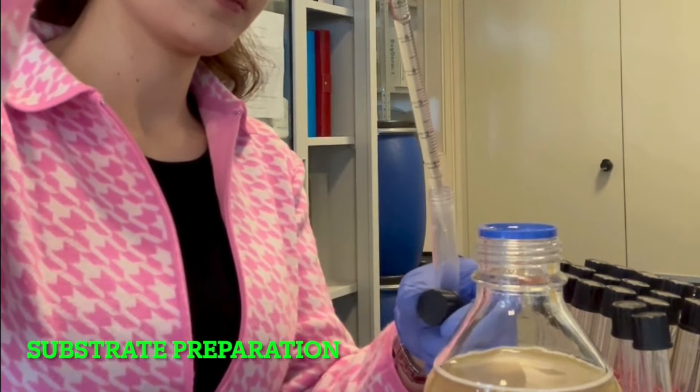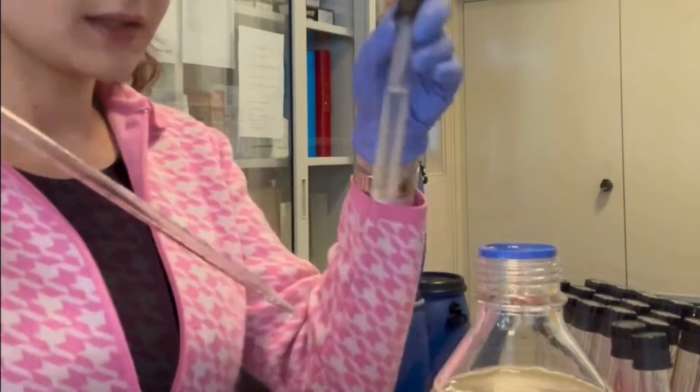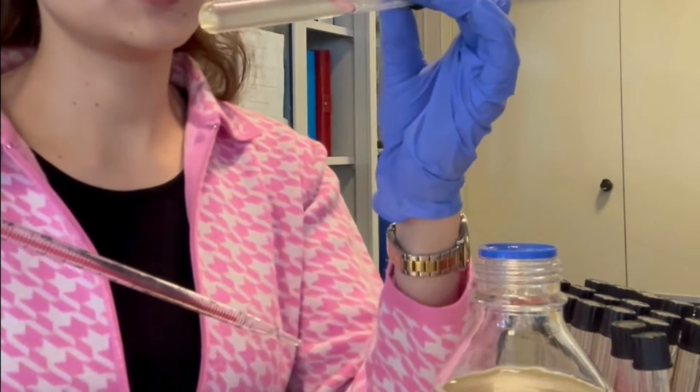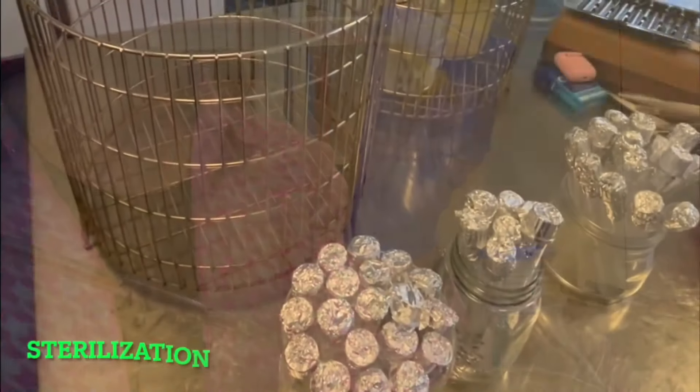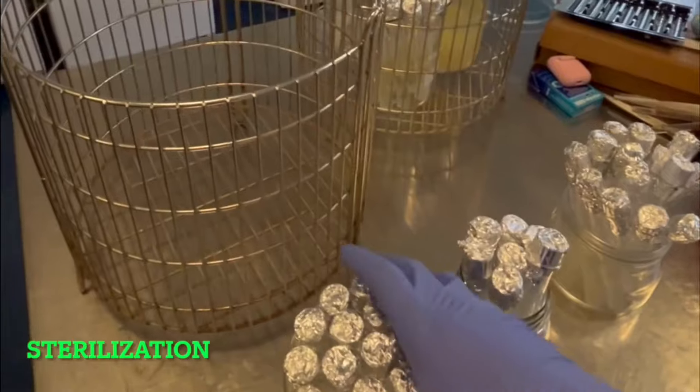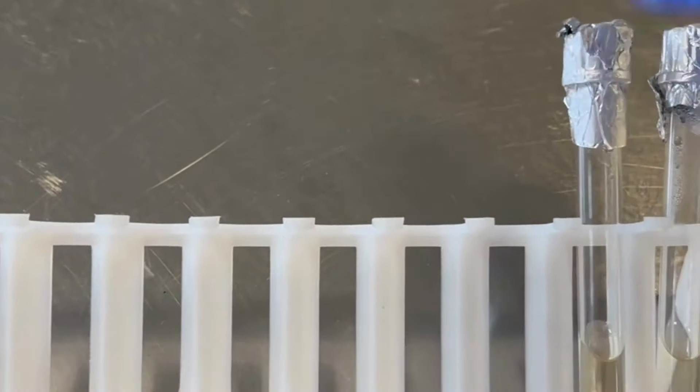Firstly, prepare the PDA tubes. Around 8 ml of PDA is poured into tubes and sterilized in an autoclave. After sterilization, PDA tubes need to cool down at room temperature.